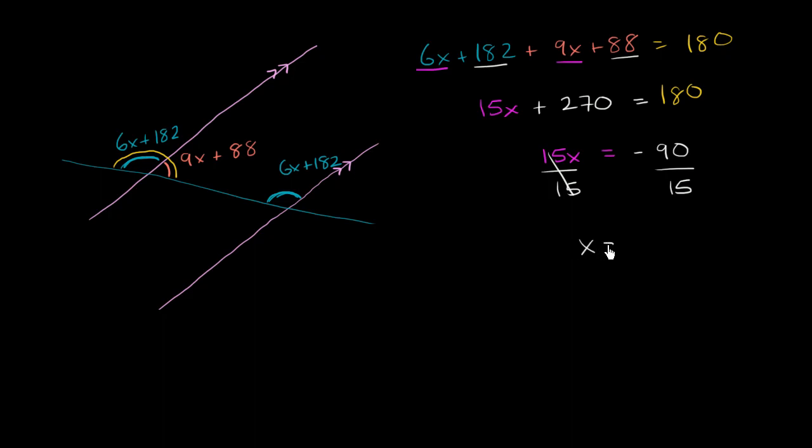And we get x is equal to, what is this? Let's see, 6 times 15 is, that's 60 plus 30 is 90. So this is, x is going to be equal to negative 6.